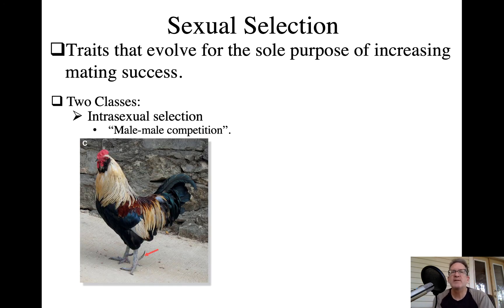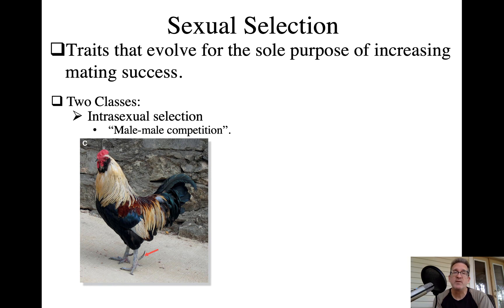We can break sexual selection into two classes. One is intrasexual selection, typically associated with competition between individuals of one sex — usually males. This is often referred to as male-male competition and can involve direct fighting, the evolution of weapons like spurs, large body size, and high testosterone for greater aggression.